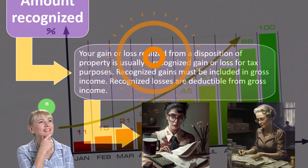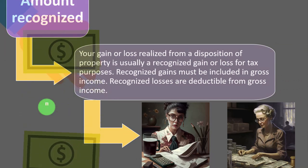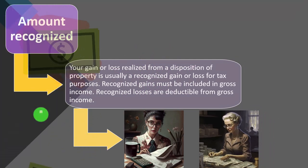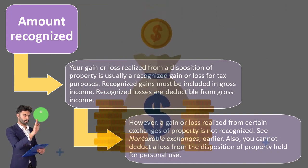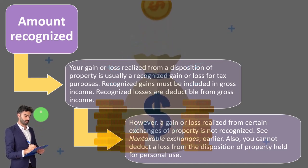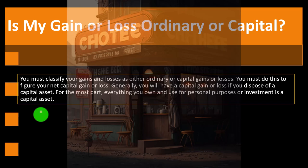Your gain or loss realized from a disposition of property is usually a recognized gain or loss for tax purposes. Recognized gains must be included in gross income. Recognized losses are deductible from gross income — so losses are kind of good and income is kind of bad. However, a gain or loss realized from certain exchanges of property is not recognized — see non-taxable exchanges. Also, you cannot deduct a loss from a disposition of property held for personal use. We're talking generally about business property.